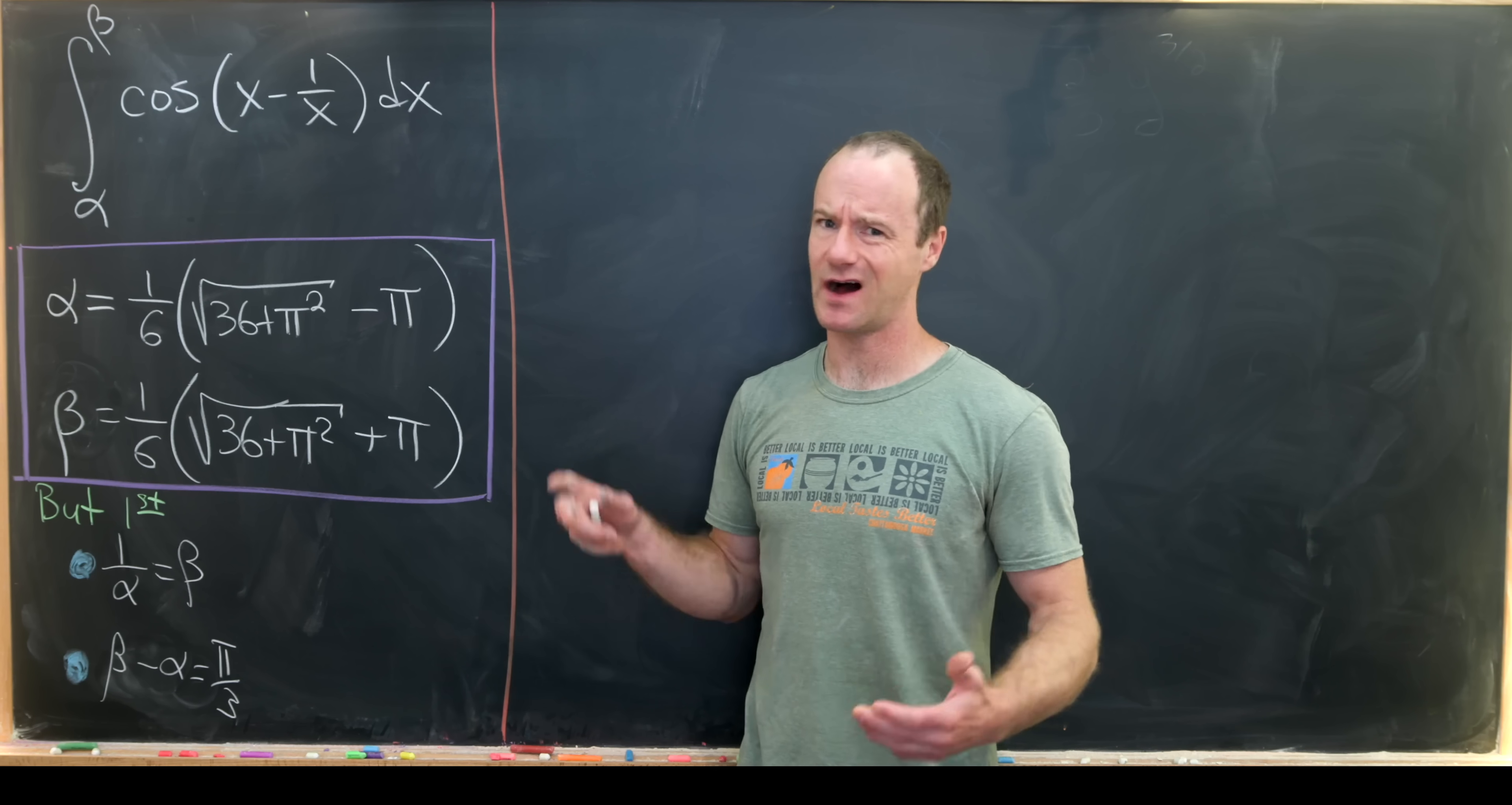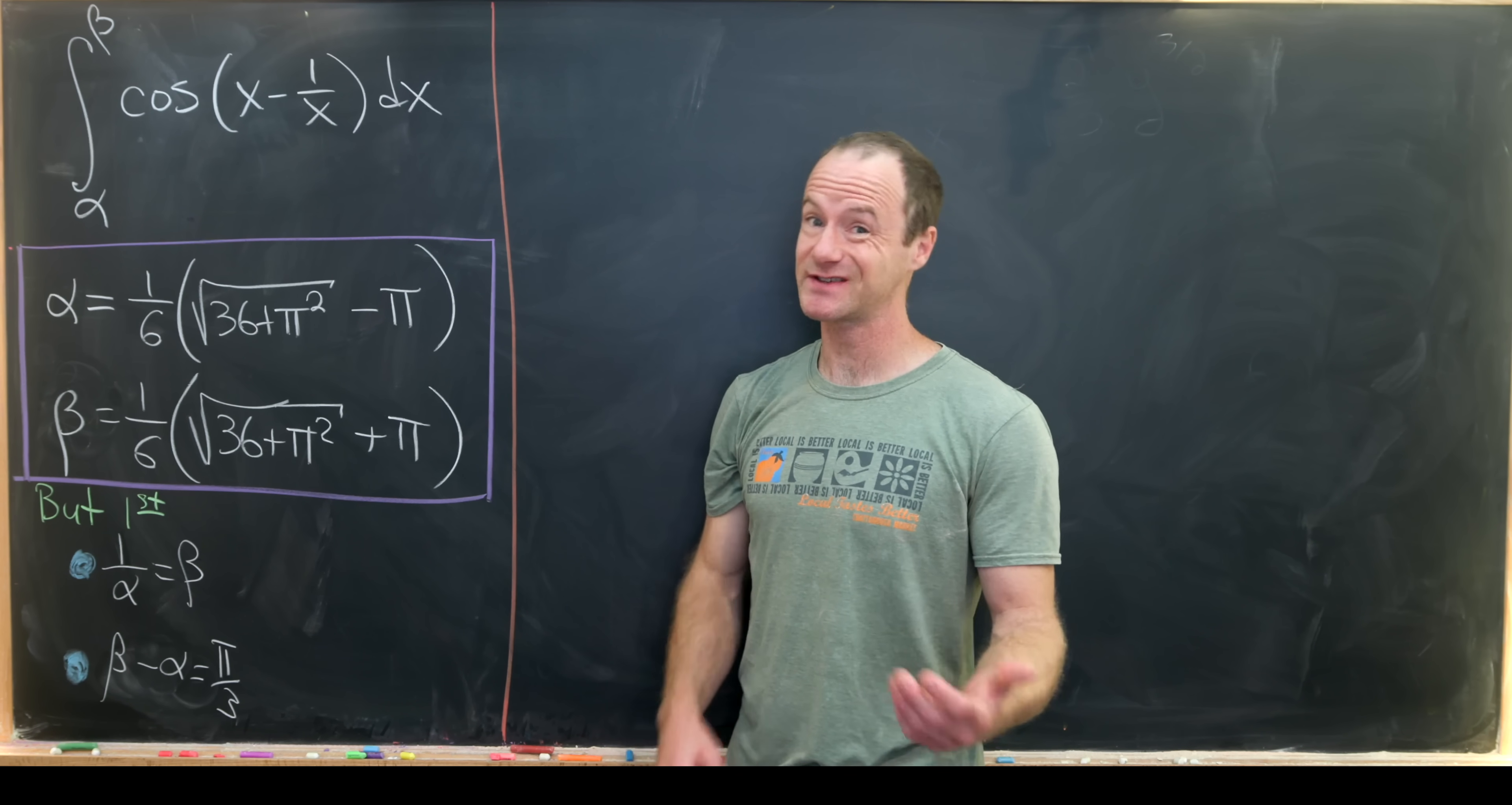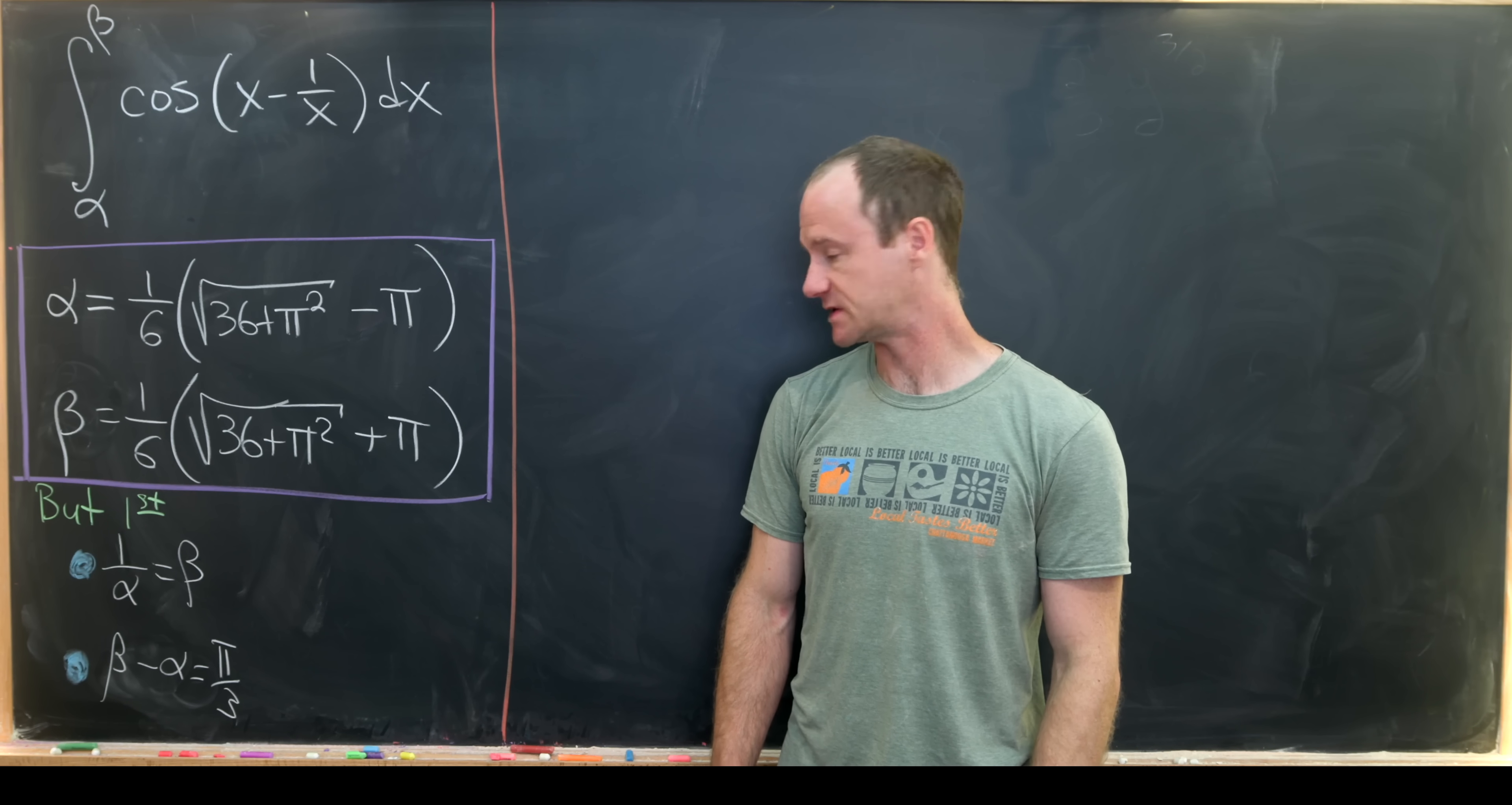And of course these are not like well-known constants alpha and beta. These are just definitions of alpha and beta for this problem to simplify the notation moving forward. Before we get started on this integration I'll first calculate some arithmetic properties of alpha and beta. The first of which is 1 over alpha equals beta.